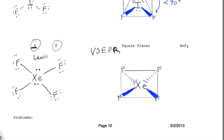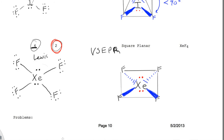The other two electron groups are going to be non-bonding, or lone pairs — non-bonding electrons are synonymous with lone pairs. One of these pairs would be up above the plane, and the other pair would be down below. The fluorines are all in the same plane.